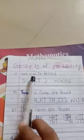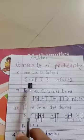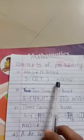Concepts of Probability. First, one coin is tossed. S is equal to H, T. N of S is equal to 2.